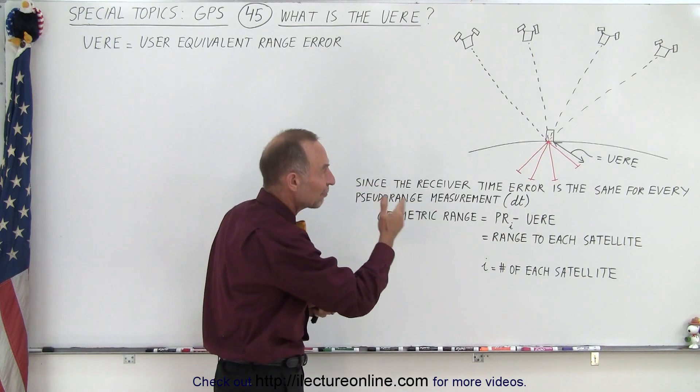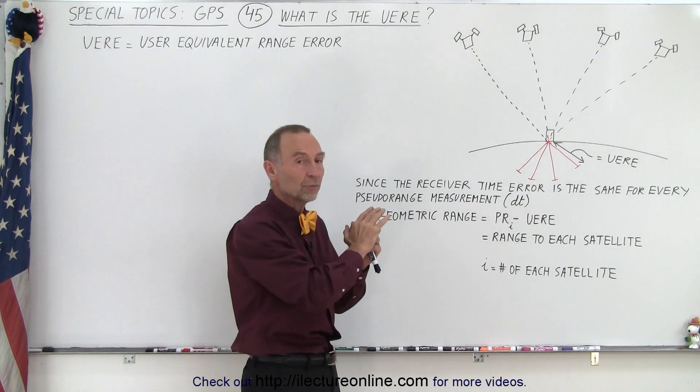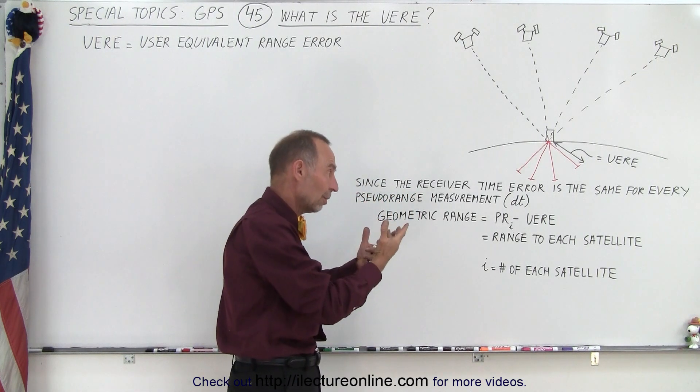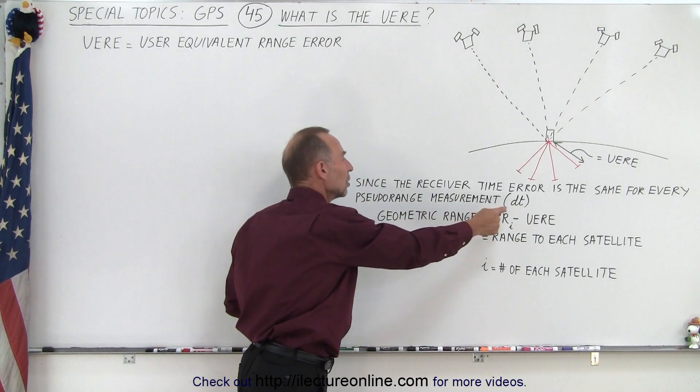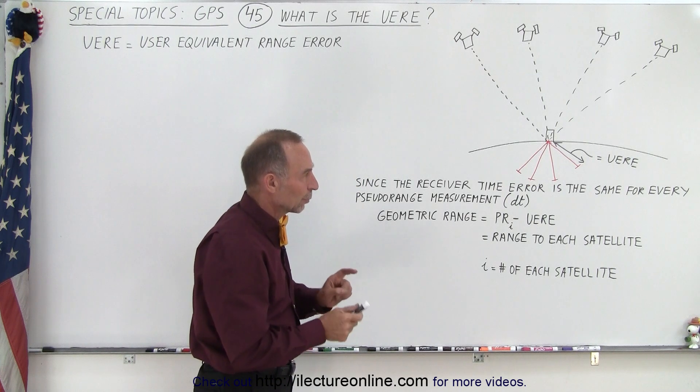Well that's the same for every one of the measurements because they all depend on the same pseudo-range measurement taken at the same time, and the error in the clock, the error of the receiver.